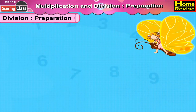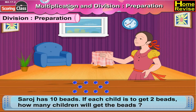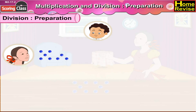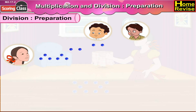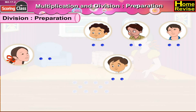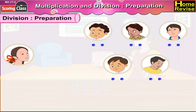Division Preparation. Saroj has ten beads. If each child is to get two beads, how many children will get the beads? Now, Saroj has ten beads. Saroj will give each child two beads. This is the first child. He gets his two beads. Now, this is the second child. He gets his two beads too. This is the third child. He gets his two beads too. Now, the fourth child gets the two beads. And in the last, the fifth child gets the two beads.